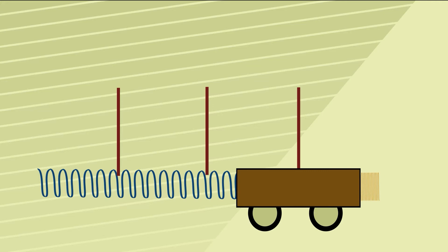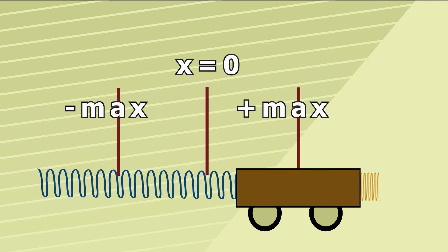Displacement is referenced from the midpoint therefore we can say this is displacement zero. The positive maximum is to the right and the negative maximum, the largest maximum in the negative direction, is on the left.